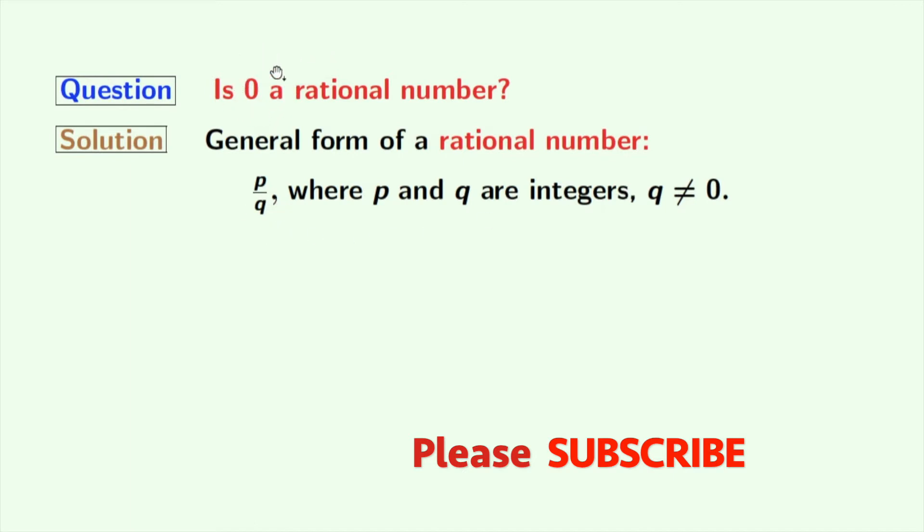If zero is a rational number, then according to this definition, zero should have been expressed as P by Q.